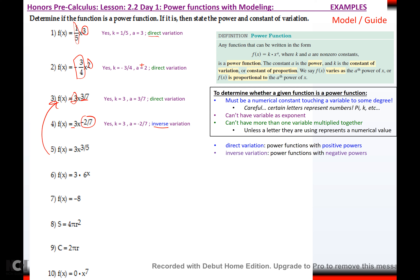f(x) = 3x^(3/5) — it's really no different. Yes, it is a power function. The constant of variation is 3. The power is 3/5, and it's direct because 3/5 is positive. For number six, is it a power function? No. k and a must be non-zero constants, not variables. x is a variable, not a non-zero constant, so this is not a power function.